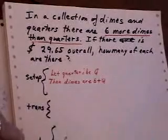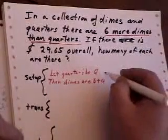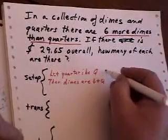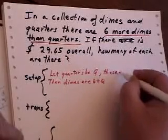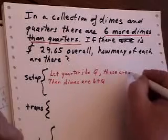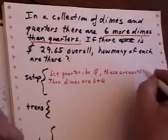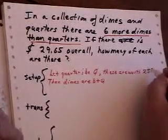Now each quarter is worth 25 cents, so you could say these are worth 25 times Q cents.